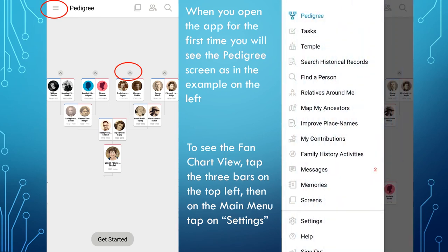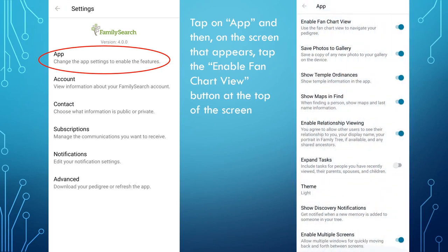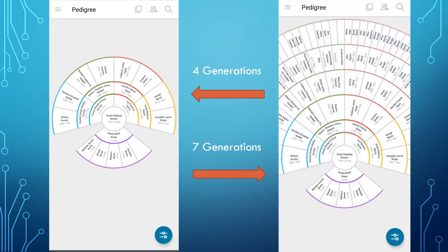This main menu will appear. From the main menu, tap on Settings. You will see a screen that looks like this; tap on App. Another screen will appear and at the top there will be an option to enable the fan chart view. Tap the Filter button to the right and this will change the pedigree view to the fan chart view. You can decide how many generations you want to see; four generations fits very nicely on the screen, but as you increase the number of generations you will not be able to see the entire fan chart on the screen.